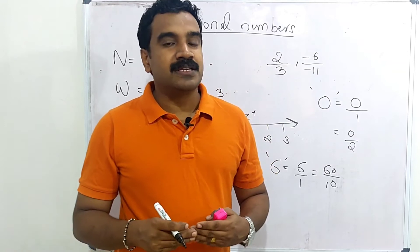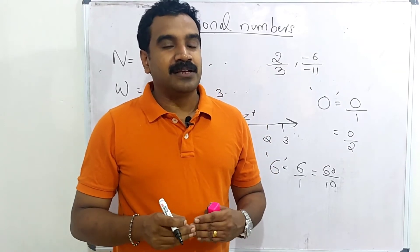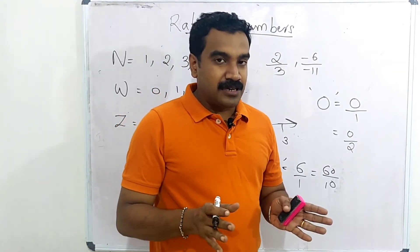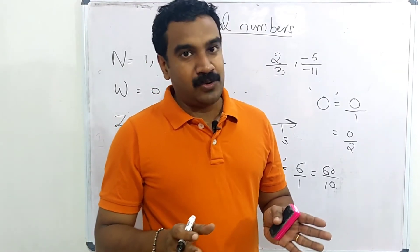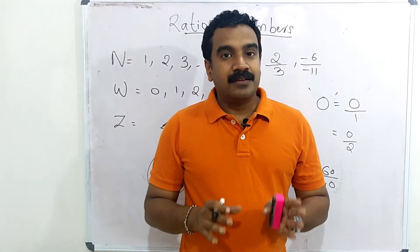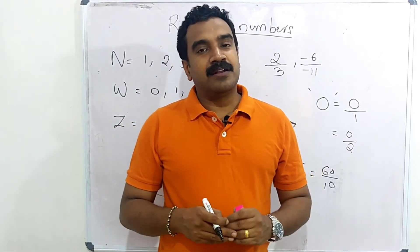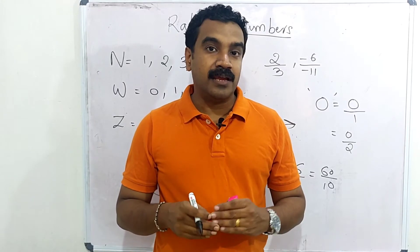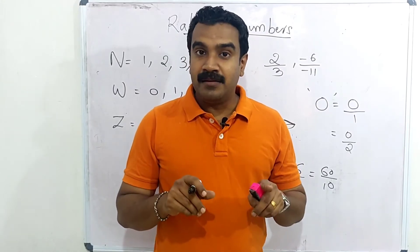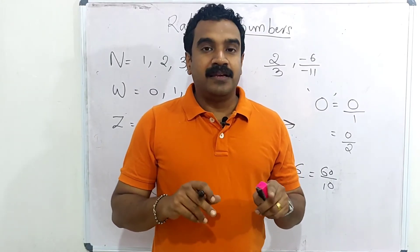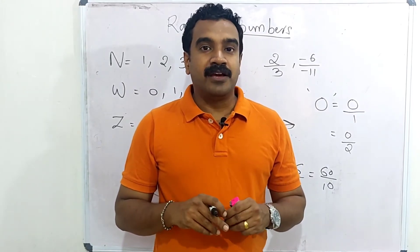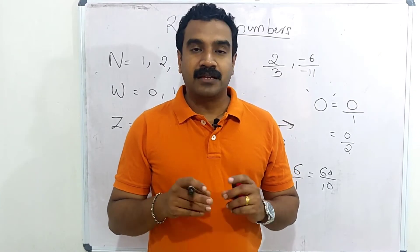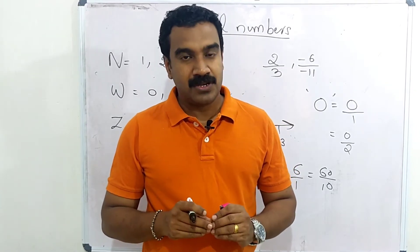What is the opposite of a rational number? It is an irrational number. A number which we cannot write in the form P by Q is known as an irrational number. Examples of irrational numbers are root 2, root 3, and pi — the value we use for finding the area of a circle using pi r squared. Pi is also an example of an irrational number.